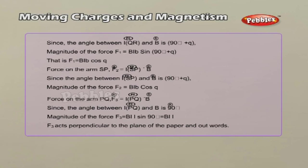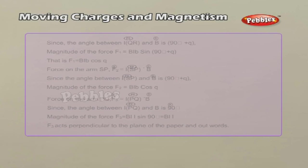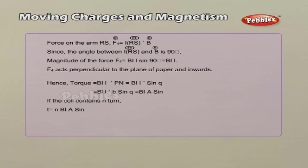The forces F₃ and F₄ are equal in magnitude, opposite in direction, and have different lines of action; hence they constitute a couple. The torque is maximum when the coil is parallel to the magnetic field and zero when the coil is perpendicular to the magnetic field.